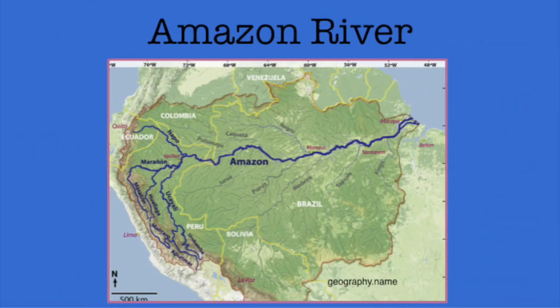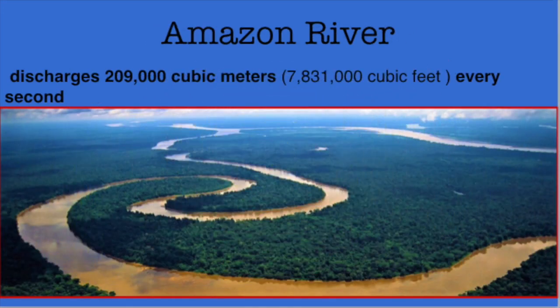The Amazon River has a history of having different starting points. The source of the Amazon has been hard to find, and several different tributaries have been credited as the starting point. The Amazon is the world's largest river by volume.